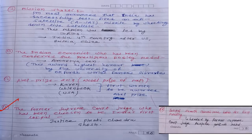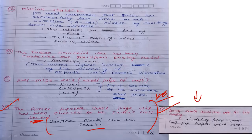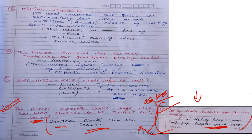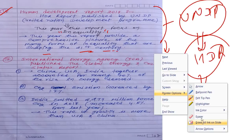Fifteenth current affair: Justice Pinaki Chandra Ghose has been chosen to be India's first Lokpal. In January 2019 current affairs, the Lokpal search committee (headed by former Supreme Court Judge Ranjana Prakash Desai) held its first meeting. In March, this committee suggested Justice Pinaki Chandra Ghose. Both names — Ranjana Prakash Desai and Pinaki Chandra Ghose — are important.